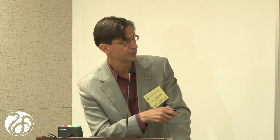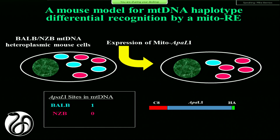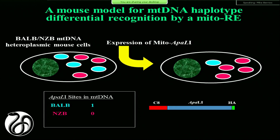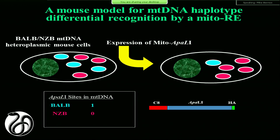We tested that with a mouse model developed by Dr. Eric Shubridge that has two types of mitochondrial DNA. They do not cause disease, but they have sequences that are a little different — one is called BALB and the other is called New Zealand black. We found a restriction enzyme called ApaL1 that could cut the BALB-type mitochondrial DNA only once but did not cut the New Zealand black type. We put a mitochondrial targeting sequence on it and expressed it in these cells, expecting it to cleave the BALB mitochondrial DNA so you'd have more of the NZB.